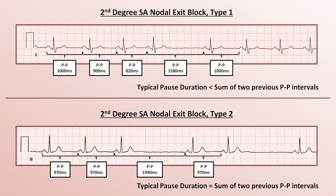Keep in mind that a diagnosis of SA exit block from the EKG is rarely this clear. In reality, patients demonstrate moment-to-moment changes in vagal tone, and even changes that fall short of classifying as sinus arrhythmia can impact these intervals enough to make it uncertain which type of SA block is occurring, or even whether what is being observed is simply severe sinus arrhythmia.